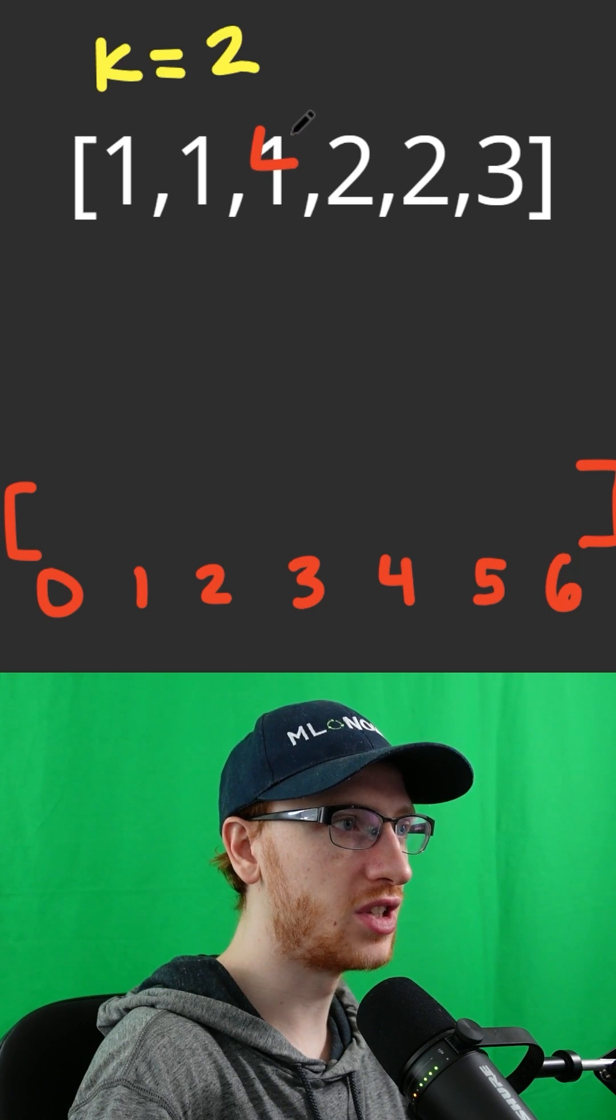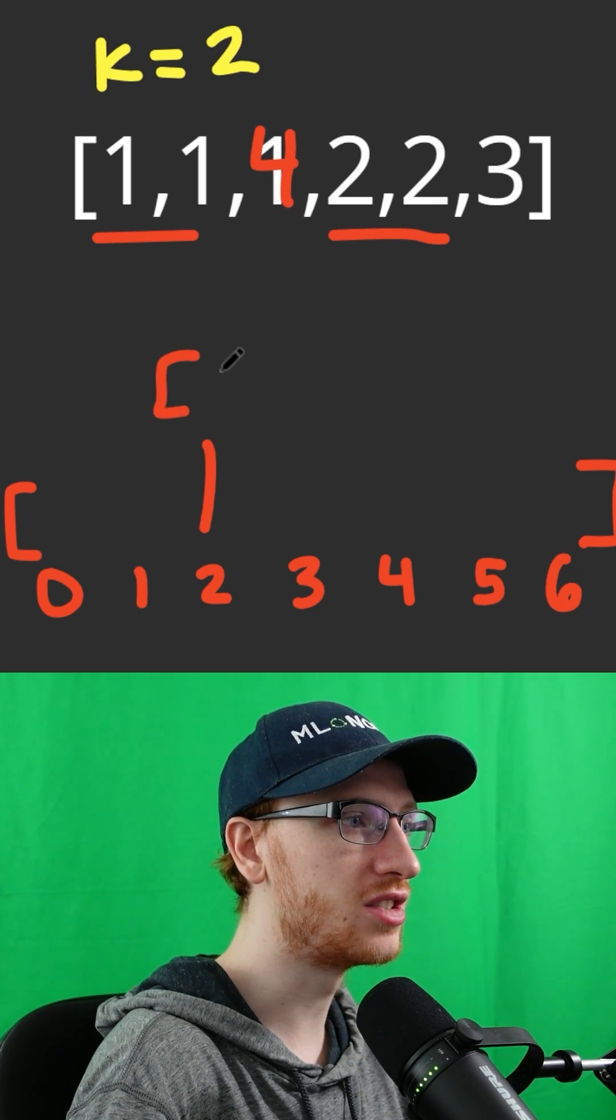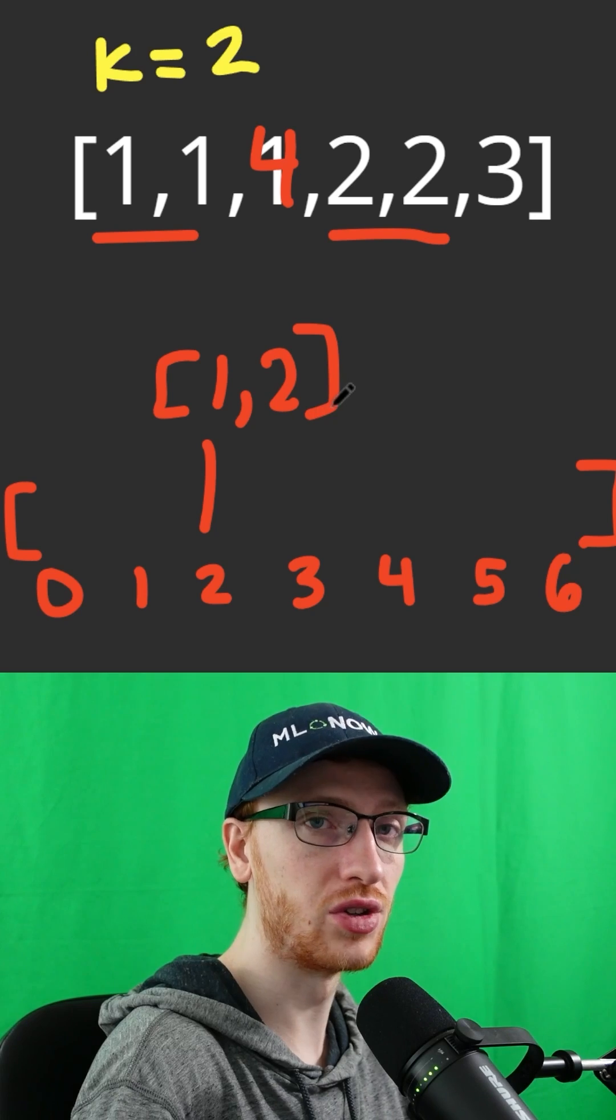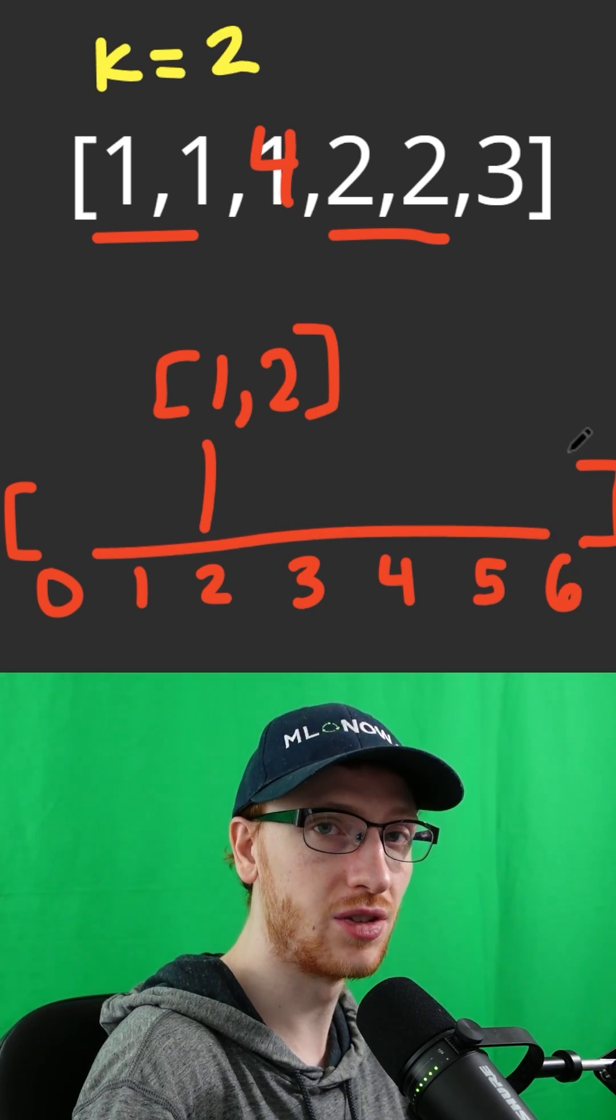But hold on, suppose this number was actually a 4. We would actually make this a list of 1 and 2, since they both belong there. So these are all going to be lists of numbers.